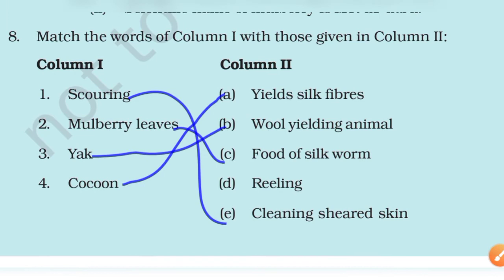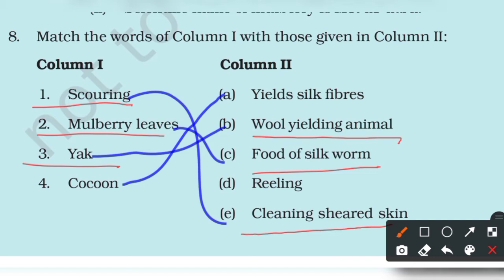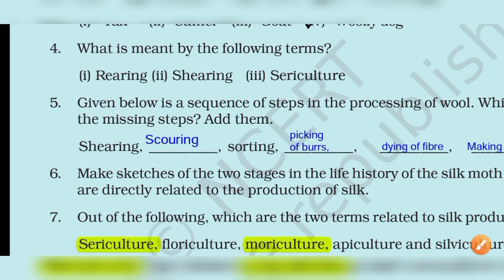Next is match the column. Scoring means cleaning of the sheared skin. Mulberry leaves are the food of silkworms. Yak is a wool-yielding animal — we get wool from yak. And cocoon yields silk fibers.